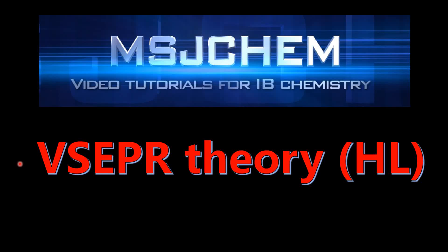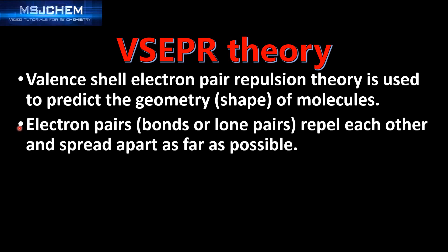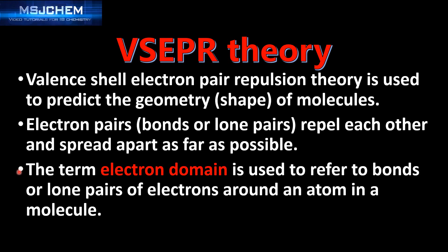This is MSJChem and in this video we're going to look at VSEPR theory for the higher level. The actual theory is the same as in the standard level video, so valence shell electron pair repulsion theory is used to predict the geometry of molecules. Electron pairs repel each other and spread apart as far as possible. The term electron domain is used to refer to bonds or lone pairs of electrons around an atom in a molecule.